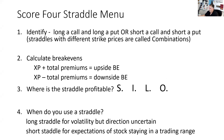A straddle with different strike prices is called a combination. The second thing we have to do is calculate the break-evens. This is the only option strategy where you have two break-evens. Remember: call up, put down. The break-evens are going to be strike price plus total premiums, and strike price minus total premiums.